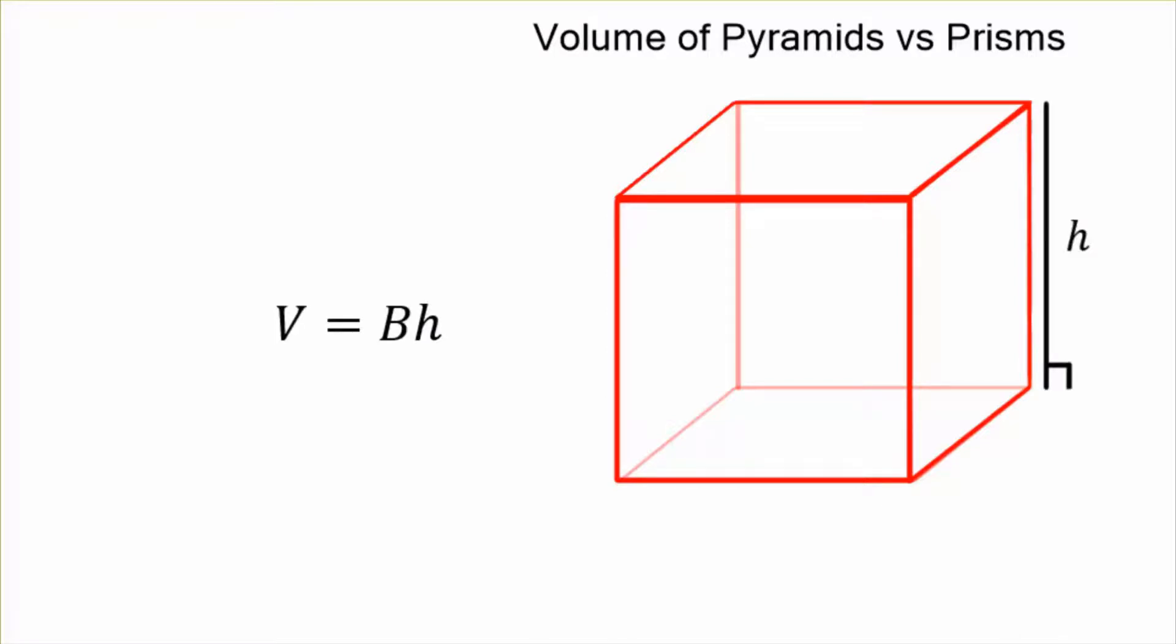The base is a rectangle, and there's our height. So our base is that bottom rectangle, and we find the area of a rectangle with length times width, so the total volume is length times width times height, base times height.